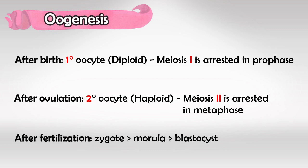So remember: the primary oocyte, which is number one, undergoes meiosis I and has full chromosomes. The secondary oocyte, which is number two, has half chromosomes and is in meiosis II.